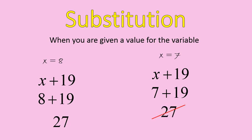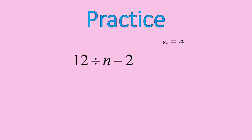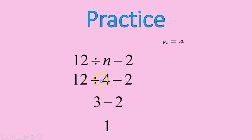Is that the number you got? Points for effort! All right, time for a little bit of practice. We're going to practice with different variable expressions. Plug n equals four into the expression twelve divided by n minus two. The first step is to substitute four in for n. Twelve divided by four is three, and three minus two is one. The reason we did division before subtraction is because order of operations tells us we do multiplication and division first, then addition and subtraction.